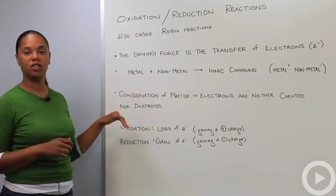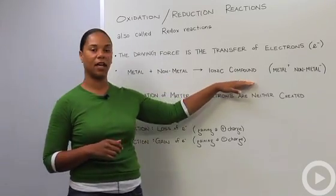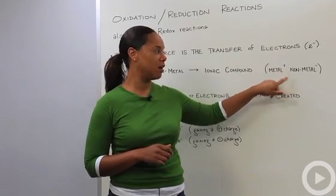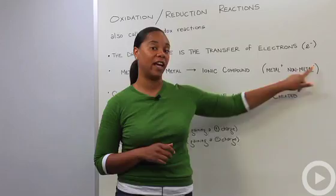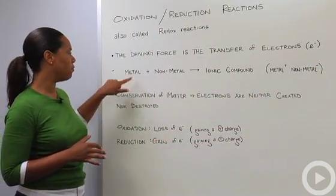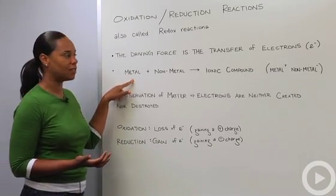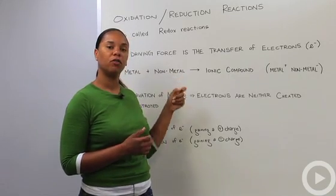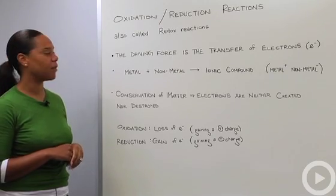So redox reactions usually occur between metals and nonmetals to form an ionic compound in which the metal becomes a positively charged ion or a cation and the nonmetal becomes a negatively charged ion or an anion. So you'll recall from your knowledge of the periodic table that metals group one and group two elements usually become cations and nonmetals from the right side of the periodic table become negatively charged ions.